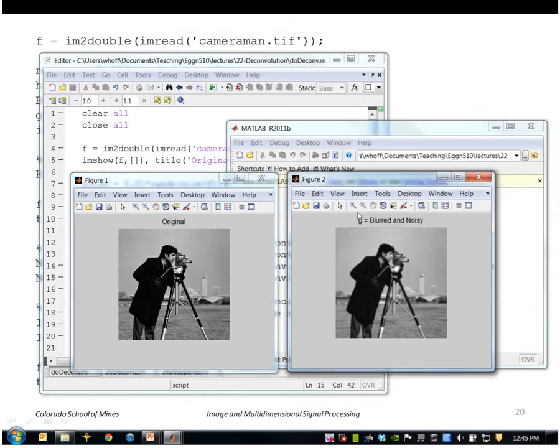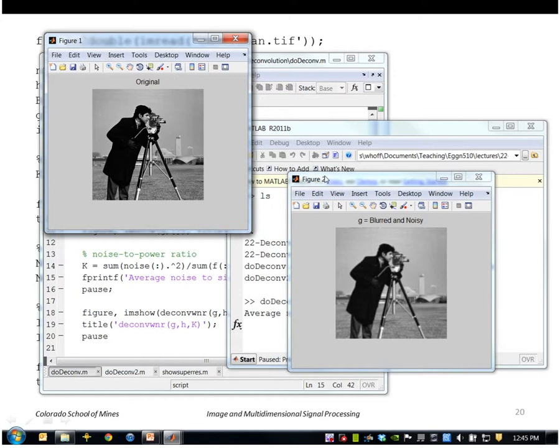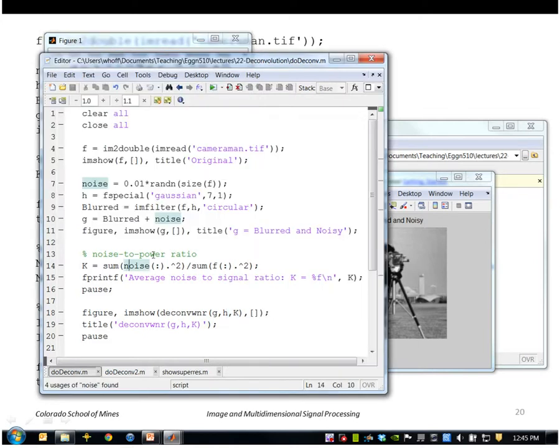We blur it with a Gaussian blur and add a little bit of noise. Next thing I'll do is to compute the average noise to power ratio.